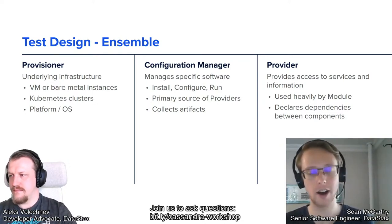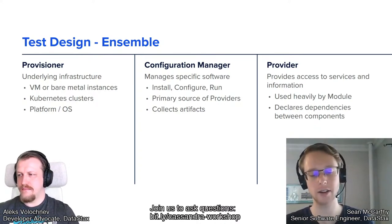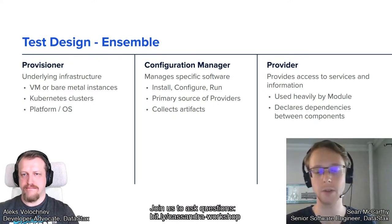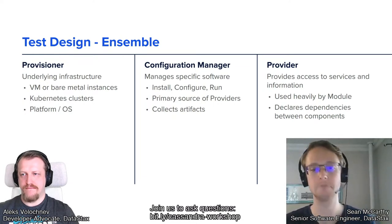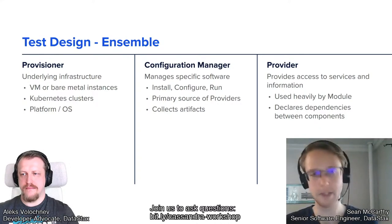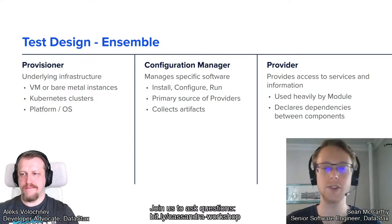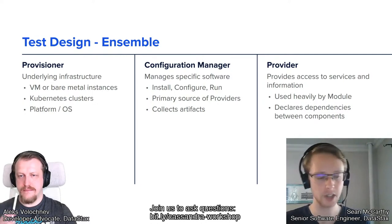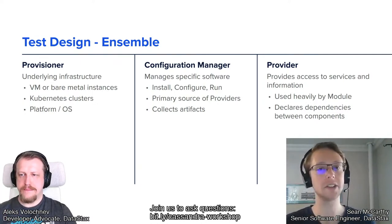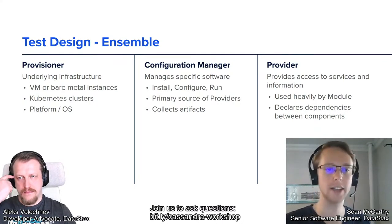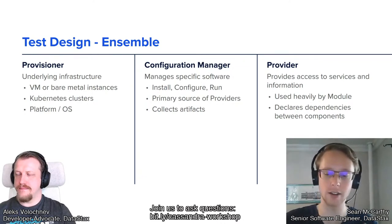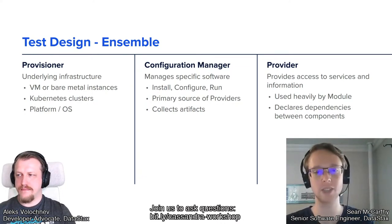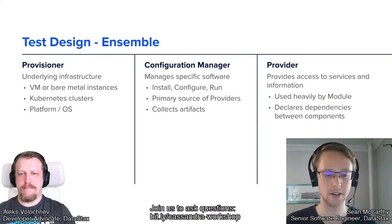The distinction is: the provisioner handles where things are running, the configuration manager handles what is running. Configuration managers are really oriented around offering services. The services are accessed through providers. Providers give us access into the different functionality represented in the ensemble, as well as information about the ensemble. For example, you can ask for a Cassandra provider — tell me what version — or a Java provider. Providers give you an API that the rest of the Fallout APIs can make use of.